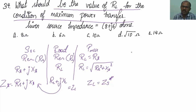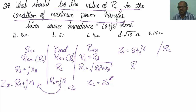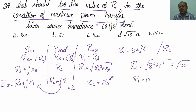They have given the source impedance as 8 plus j6, which is ZS. They are asking what value of RL gives maximum power transfer. So RL equals the square root of RS squared plus XS squared, which is the square root of 8 squared plus 6 squared, giving the square root of 100. Therefore RL equals 10 ohms — option C is correct.